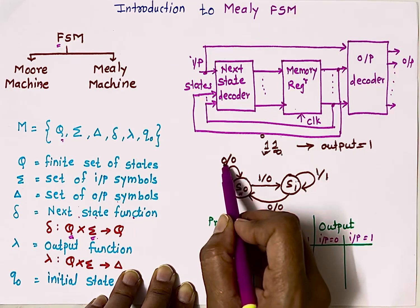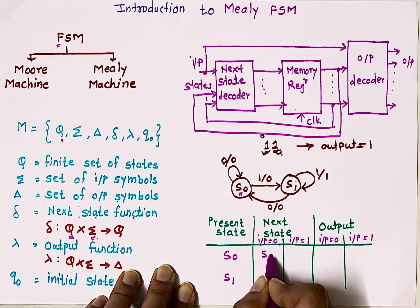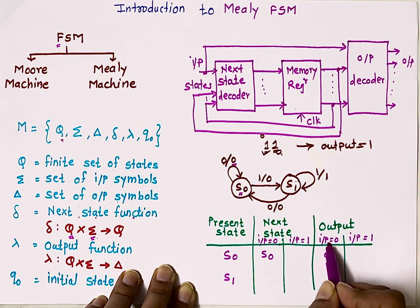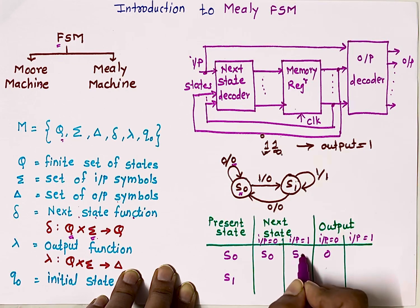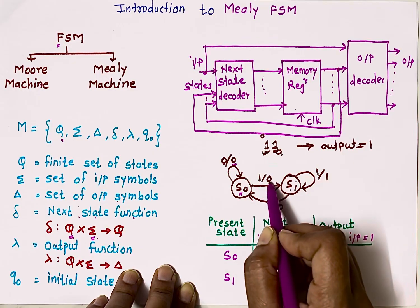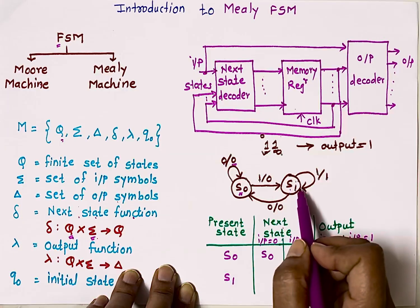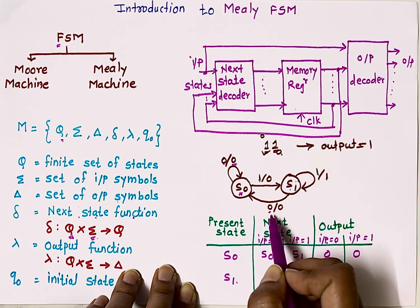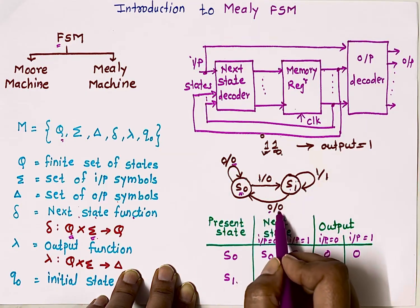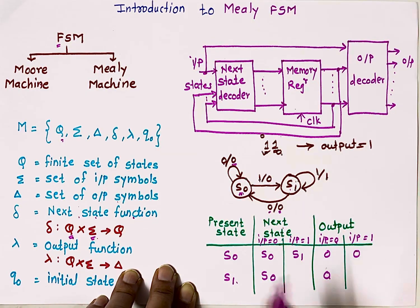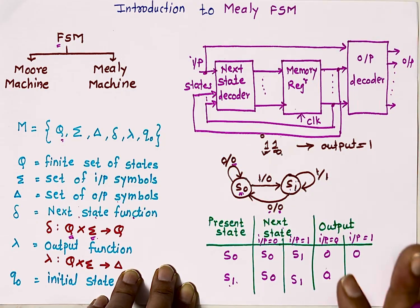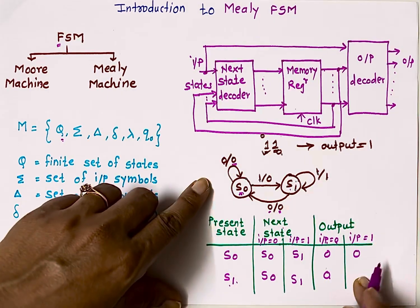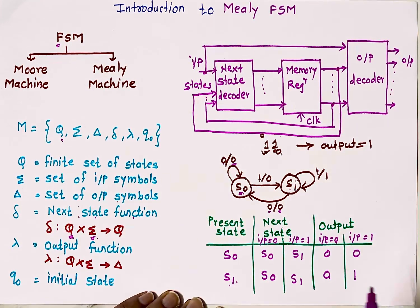Now let's write the state table. If present state is S0 and input is 0, next state is S0 and output is 0. If present state is S0 and input is 1, next state is S1 and output is 0. If present state is S1 and input is 0, next state is S0 and output is 0. If present state is S1 and input is 1, next state remains S1 and output is 1. In this way we write the state table.